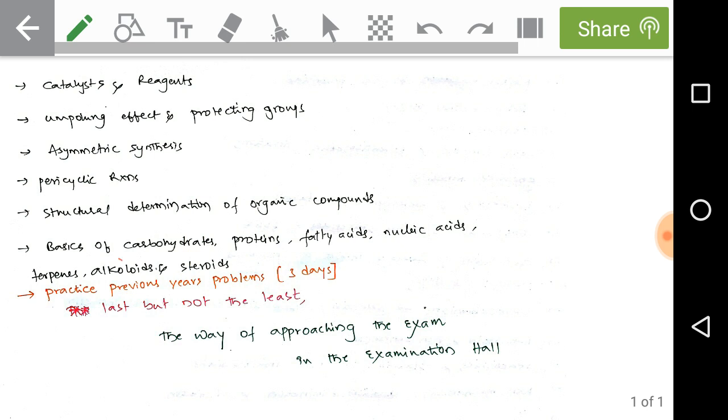It is an easy topic to get score on. And the structural determination of organic compounds. And basics of carbohydrates, proteins, fatty acids, nucleic acids, terpenes, alkaloids and steroids, that means the structures. The combinations of alkaloids, their names and their structures like that. So here if you see this syllabus is it enough? You may get a question in your mind.